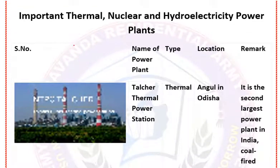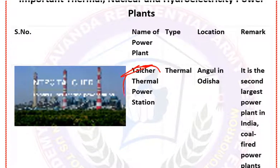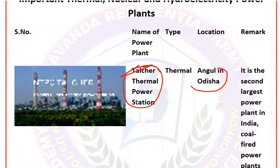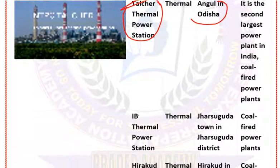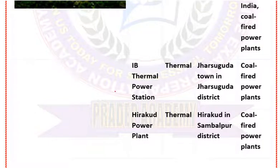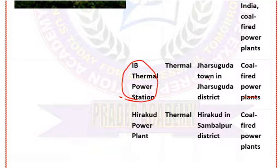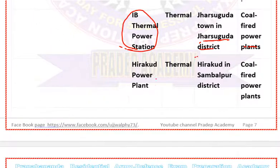Next are important thermal, nuclear, and hydro electricity power stations. Talcher Thermal Power Station is in Angul district of Odisha and is the second largest thermal power station of India. The largest thermal power station in India is Vindhyachal Power Station in Madhya Pradesh. The IB Thermal Power Plant is in Jharsuguda district of Odisha. Hirakud Thermal Power Station is in Sambalpur district.